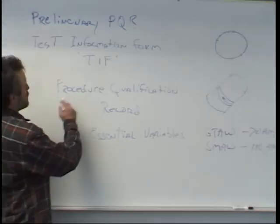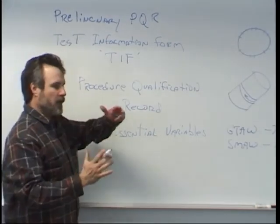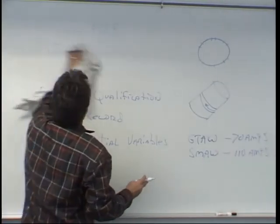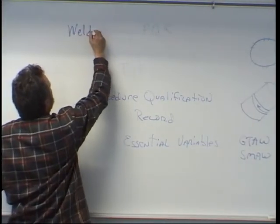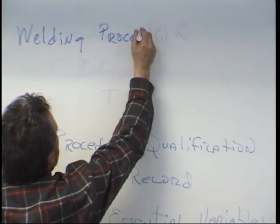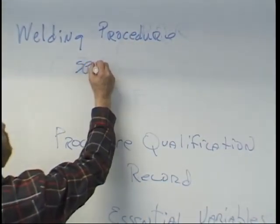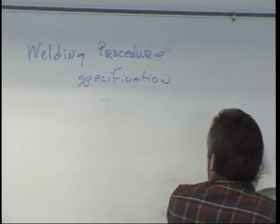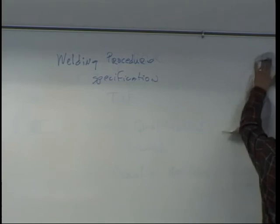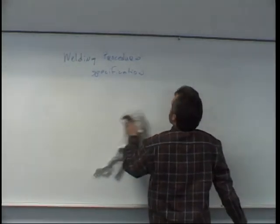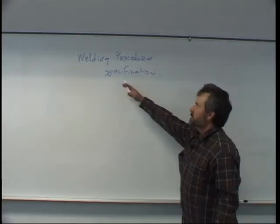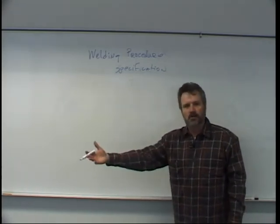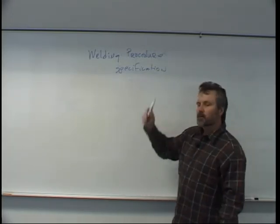All of this information is recorded on that procedure qualification record. Now we take our procedure qualification record and from that we're going to write a document called a Welding Procedure Specification. A specification gives us the variables and criteria that have to be followed in fabrication. These are the instructions based on our PQR that will go out into the fabrication shop or work site that all welders will have to follow whenever they make welds.